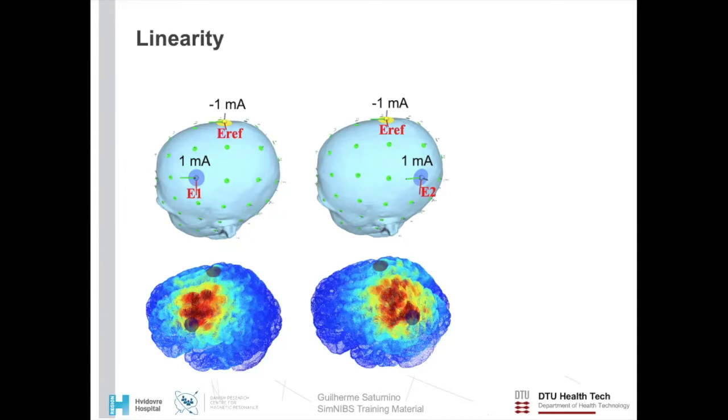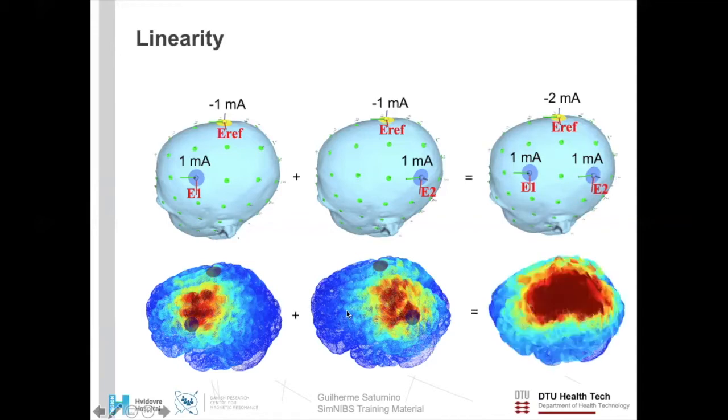The human head is a linear ohmic conductor. This means that we can calculate electric fields for new electrode setups by mixing and matching different simulation results for other electrode setups. This is extremely useful for TES optimization. Here, for example, we have two simulations. On the left, we have an anode over FC3 and a cathode over CZ. And on the right, we have moved the anode to a more posterior position CP3. Suppose that I want to calculate a new situation where I am using both of the anodes at the same time. Instead of running a new simulation, I can basically just sum the two existing ones and I get the same exact result as I would get by simulating this here in the first place.